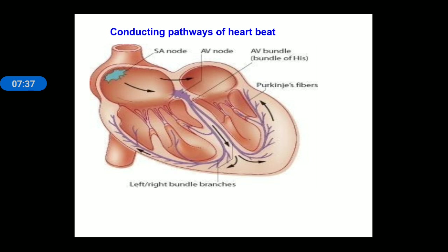Next, this is the conducting pathway of heartbeat — how our heartbeat is conducted and generated. To generate the heartbeat, there is a structure called the SA node. From the SA node, a wave of contraction is generated. This wave of contraction spreads through the atria, and then it is received by the AV node. From the AV node it travels through the Bundle of His to the Purkinje fibers.